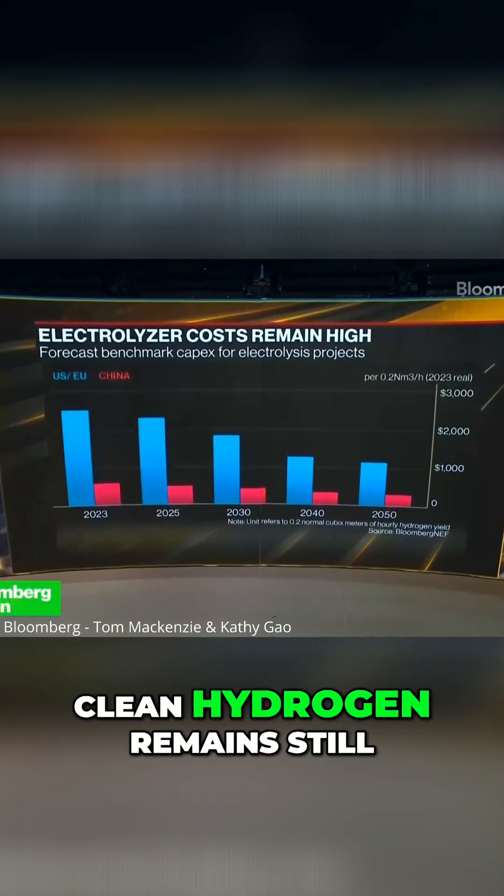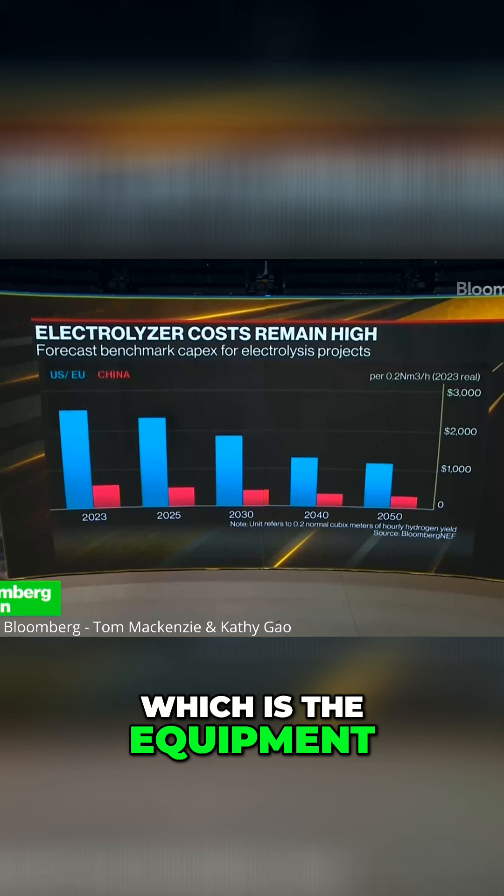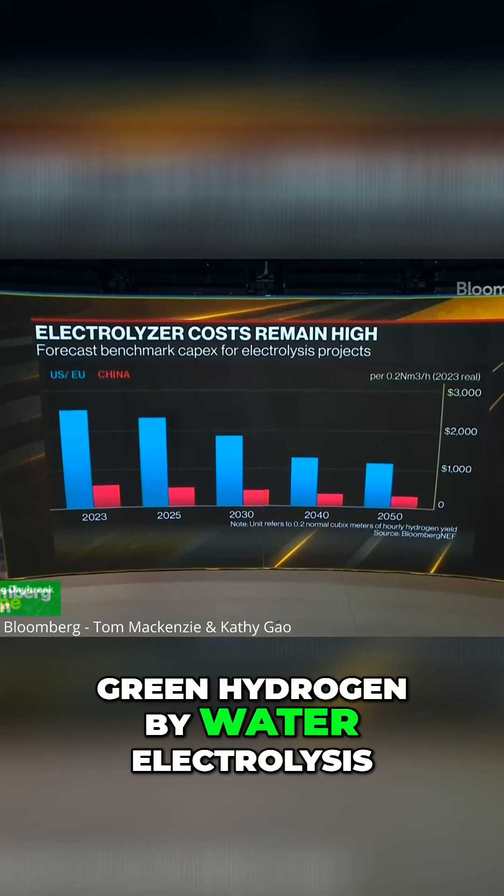One reason why clean hydrogen remains expensive right now is because electrolyzer, which is the equipment we use to make green hydrogen by water electrolysis, is quite expensive.